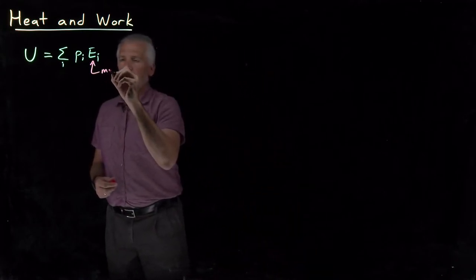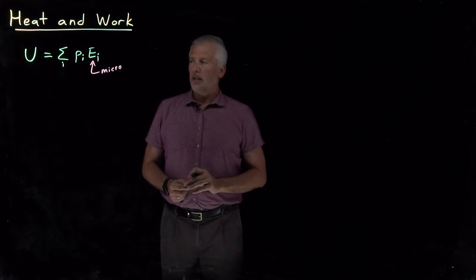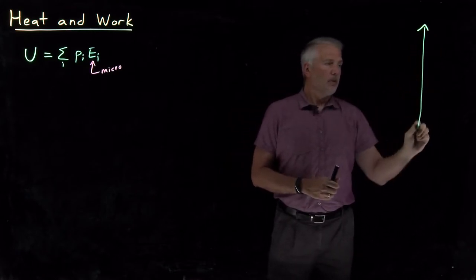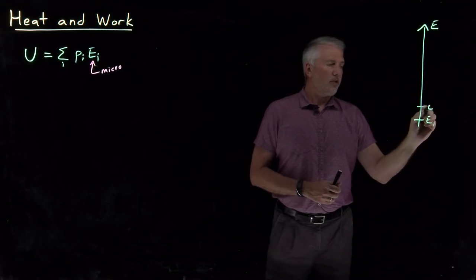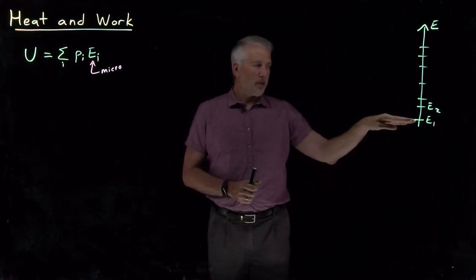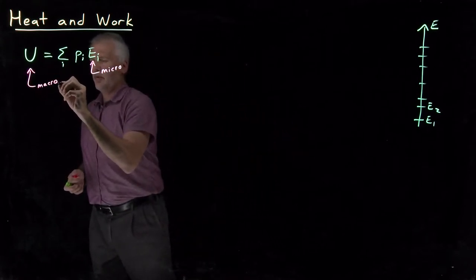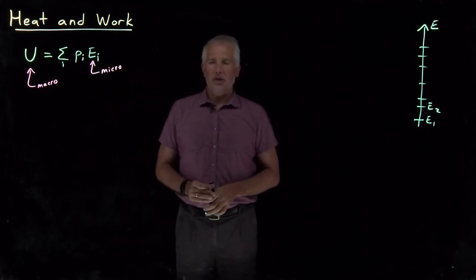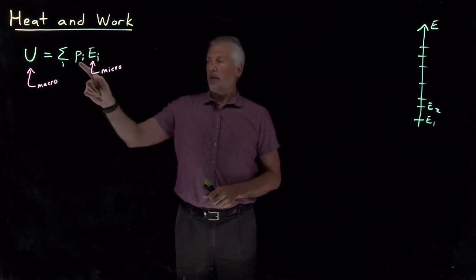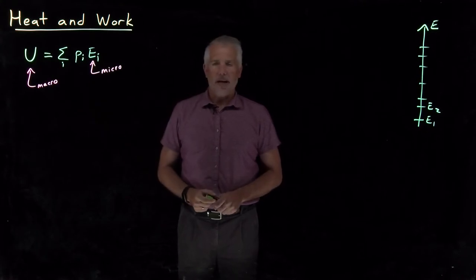These E sub i's are the individual microscopic energies that we could obtain, for example, by solving quantum mechanics — Schrödinger's equation — to obtain these energies. For a particular system, we might have this energy level allowed, or this one, or this one: a family of different energy levels the system can occupy. The average energy for the entire system depends on how populated each of those energy levels is, each with its own Boltzmann probability. If I multiply each of those energies by the probability that it's occupied and sum up over all the different states, that tells me my macroscopic or average thermodynamic energy.